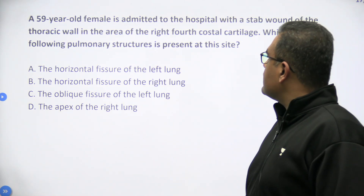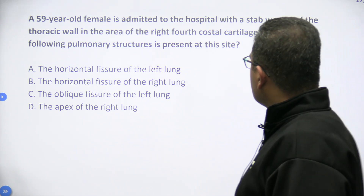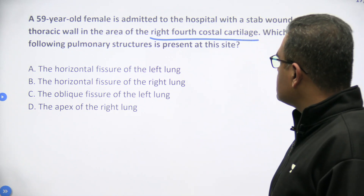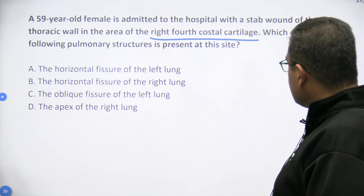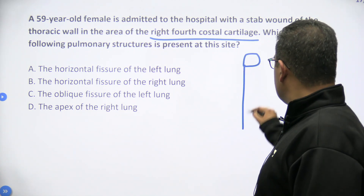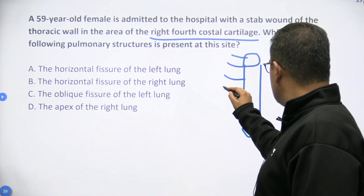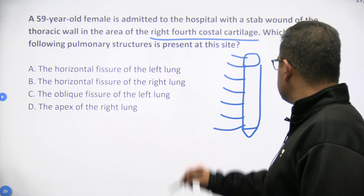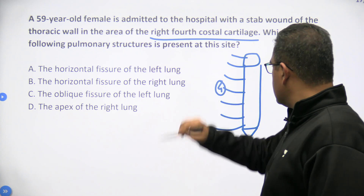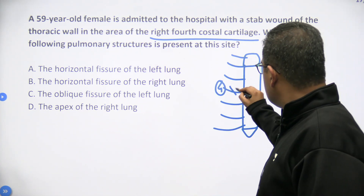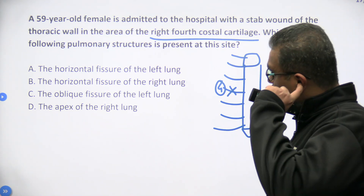A 29-year-old female is admitted to the hospital with a stab wound of the thoracic wall in the area of the right 4th costal cartilage. Which pulmonary structure is present at this site? Looking at the sternum — the manubrium, body, xiphoid — and counting the ribs: first, second, third, fourth. So this is the fourth costal cartilage with a stab wound here. What part of the lungs is at the right 4th costal cartilage?